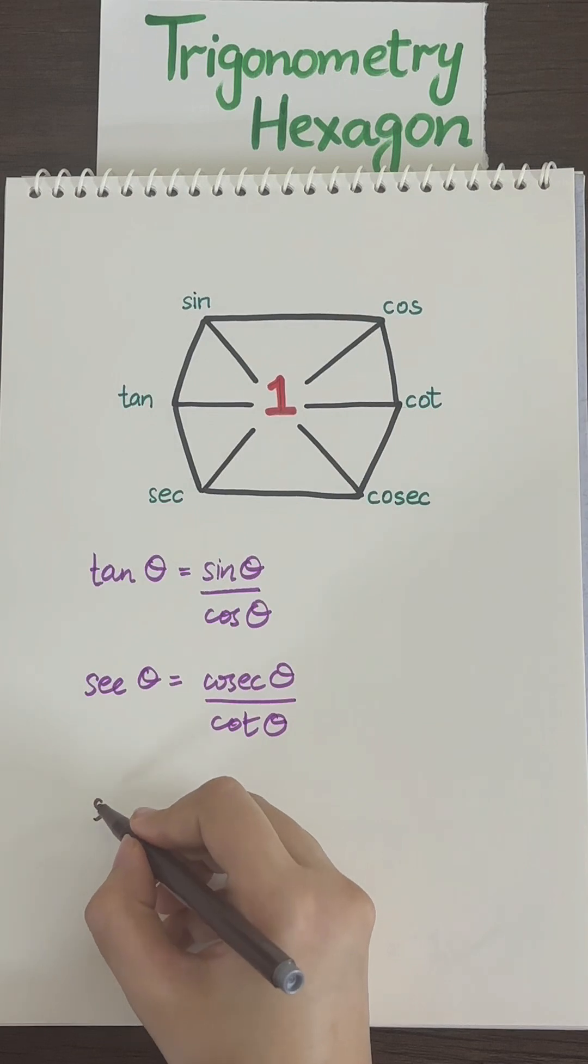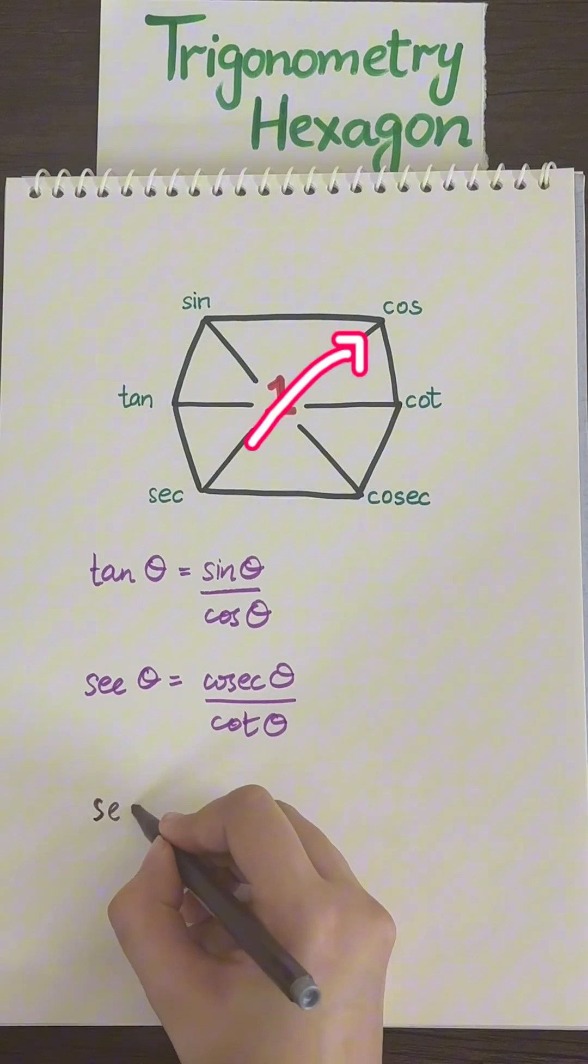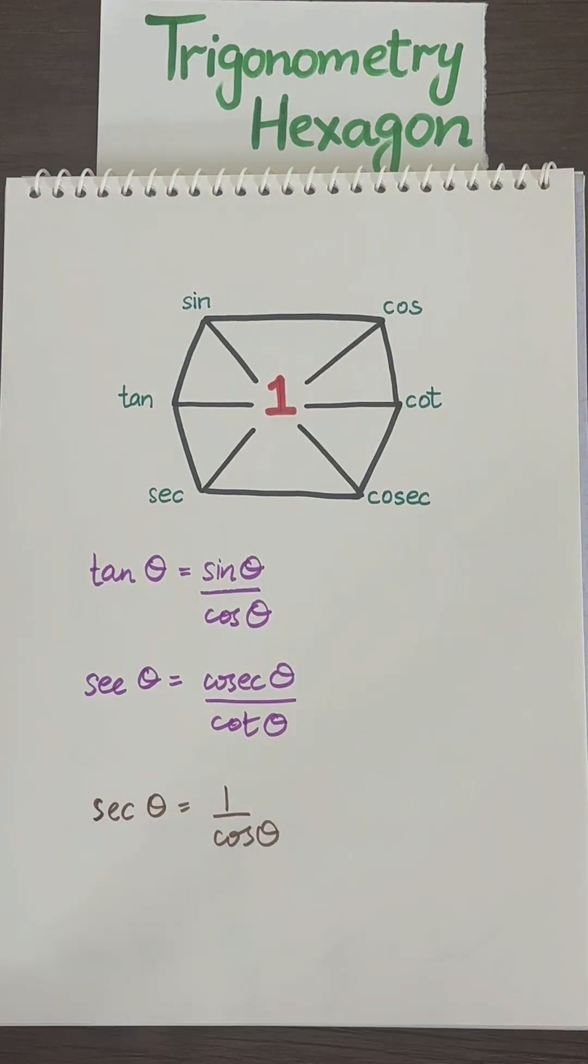Now let's go across. Let's say we start with secant. Going across secant, we have one over cos theta. Let's start with cotangent now. Now we have cotangent theta equals one over tangent theta.